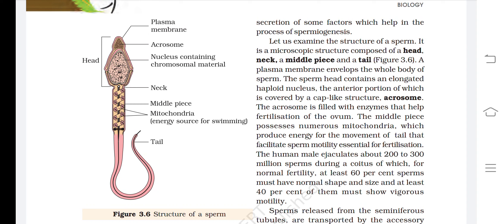The middle piece possesses numerous mitochondria, which produce energy for movement of the tail that facilitates sperm motility — essential for fertilization. The human male ejaculates about 200 to 300 million sperms during coitus; for normal fertility, at least 60% must have normal shape and size, and at least 40% must show vigorous motility.